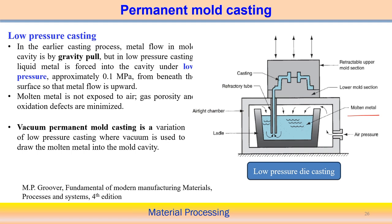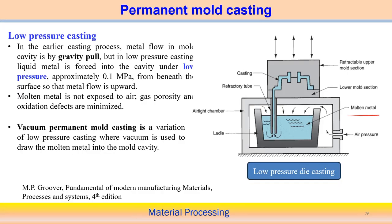By creating a low pressure zone — achieved by removing air — gas porosity and oxidation defects associated with air presence can be minimized, compared to gravity die casting. The liquid metal is sucked through the channel to fill the mold cavity. This low pressure casting process is basically a variant of vacuum casting, since a similar principle is used — removing air to create a vacuum, causing the liquid metal to rush in and fill the cavity.